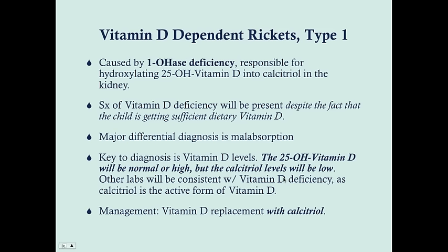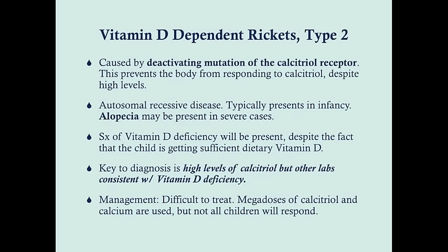Other labs in VDDR Type 1 are similar to vitamin D deficiency because calcitriol isn't functioning. A differential diagnosis is chronic kidney disease, but that will usually be more obvious in the history. Management requires replacing with the active form — calcitriol directly — because giving regular vitamin D won't help since the child cannot convert it.